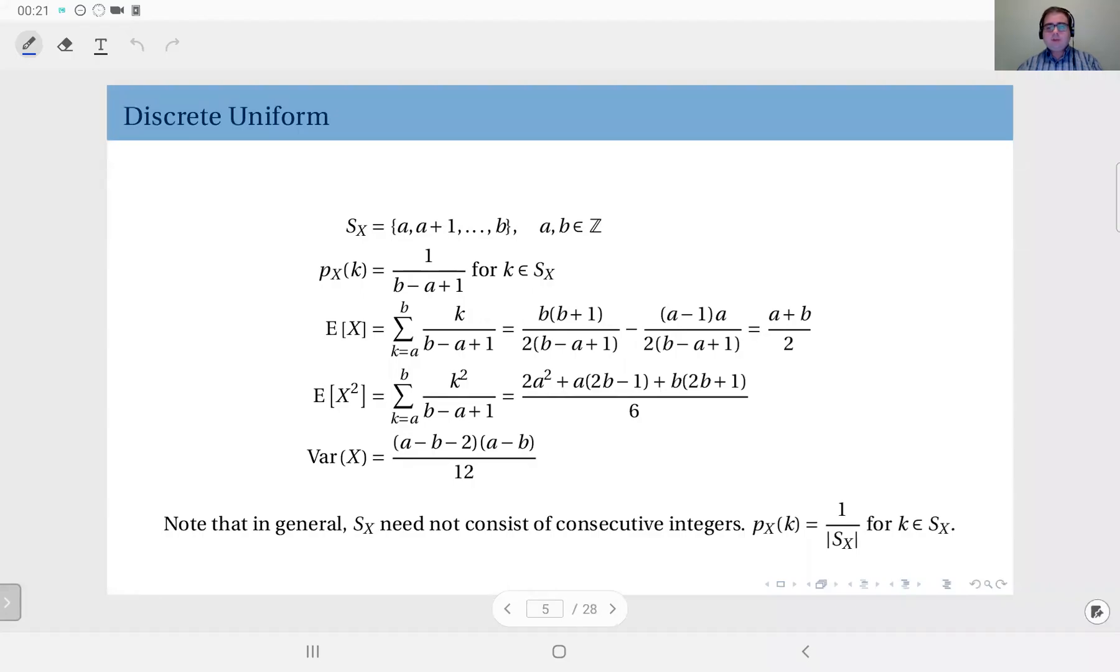We will start with discrete distributions, and the first one we will talk about is discrete uniform. We will talk about this distribution considering the sample space or the set of outcomes is this set from A to B, integers from A to B.